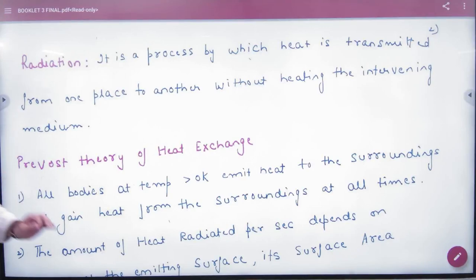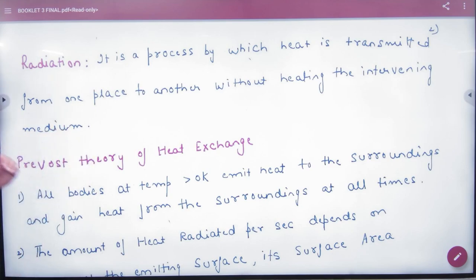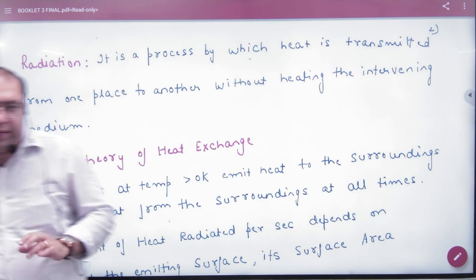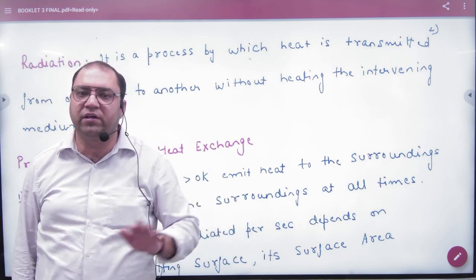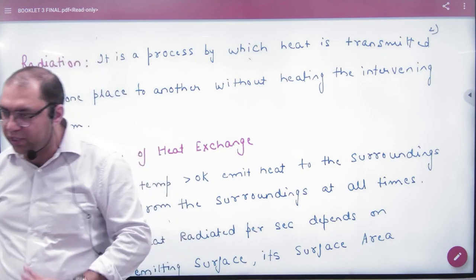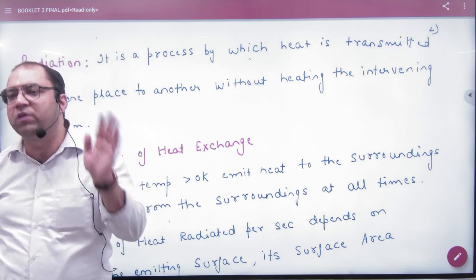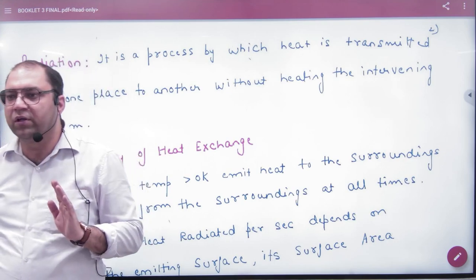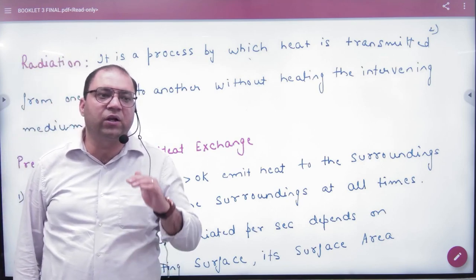Radiation is a process by which heat is transmitted from one place to another without heating the intervening medium. In radiation, heat travels from one point to another point. To travel from one point to another, it doesn't need a molecule, water, or anything. Even in vacuum it will travel, because heat radiations are electromagnetic in nature.